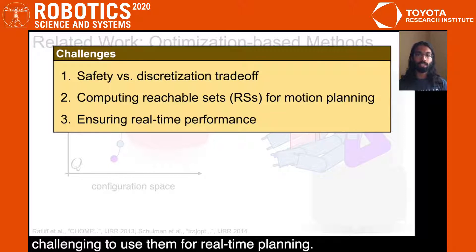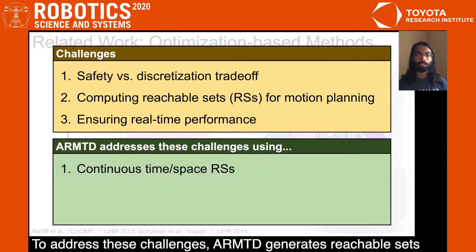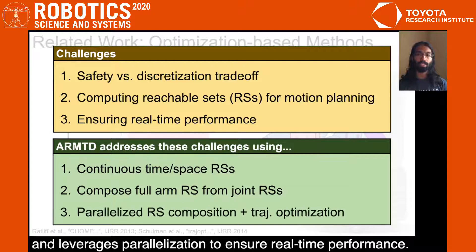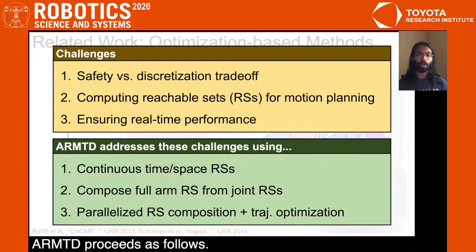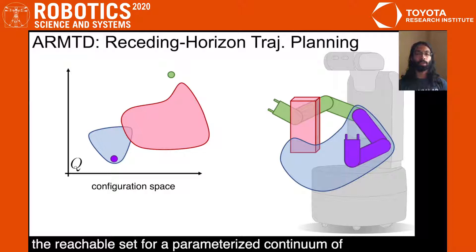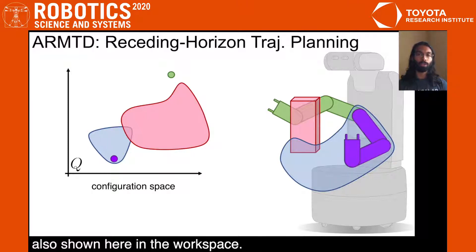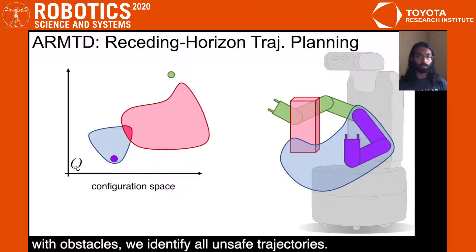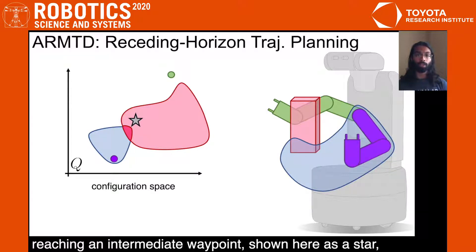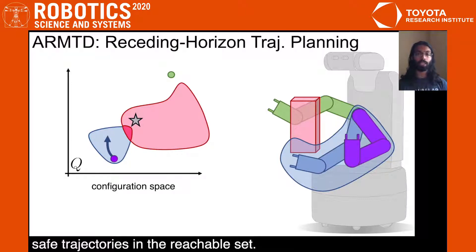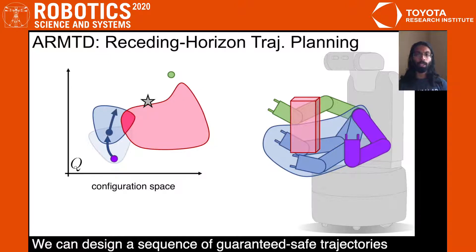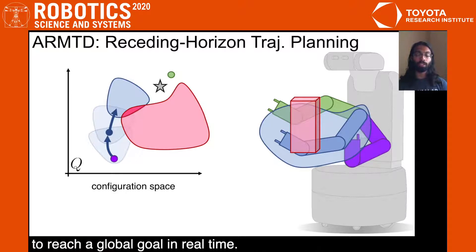Continuous time and space reachable sets can avoid this challenge but are hard to compute due to the nonlinear map from configuration space to workspace. Furthermore, given such reachable sets, it's challenging to use them for real-time planning. To address these challenges, ARMTD generates reachable sets composed of simple reachable sets of each joint and leverages parallelization to ensure real-time performance. Starting from a configuration, we first compute the reachable set for a parameterized continuum of short configuration space trajectories, also shown here in the workspace. By intersecting the workspace reachable set with obstacles, we identify all unsafe trajectories. Then, given a cost function such as reaching an intermediate waypoint, shown here as a star, we perform trajectory optimization over the safe trajectories in the reachable set. By repeating the reachable set construction, constraint identification, and trajectory optimization procedure, we can design a sequence of guaranteed safe trajectories to reach a global goal in real-time.